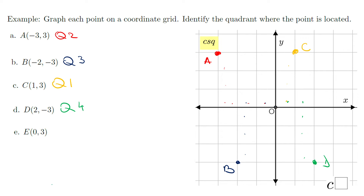My next point will be point E at zero and three. From the origin, I'm going to stay here and just move three up. This is point E, which is on the y-axis. This point is not in quadrant one, nor in quadrant two.